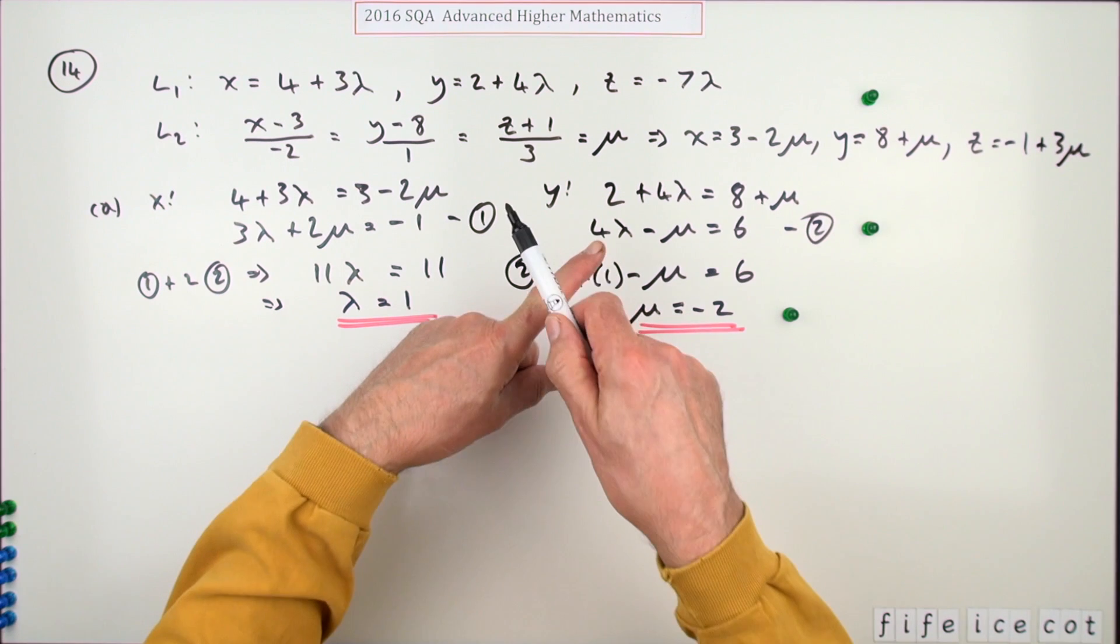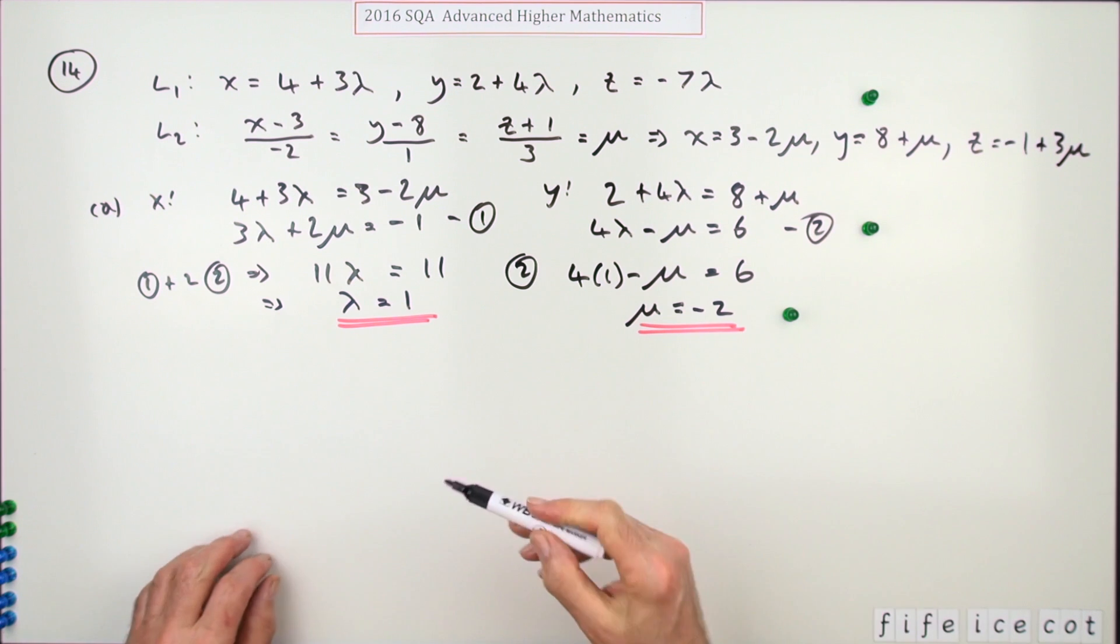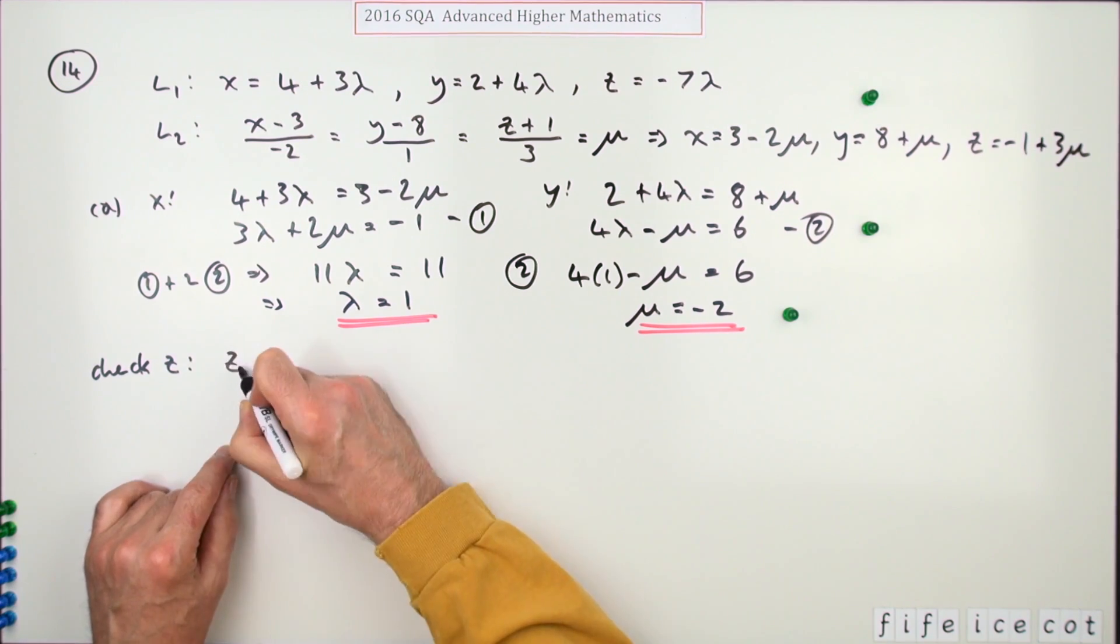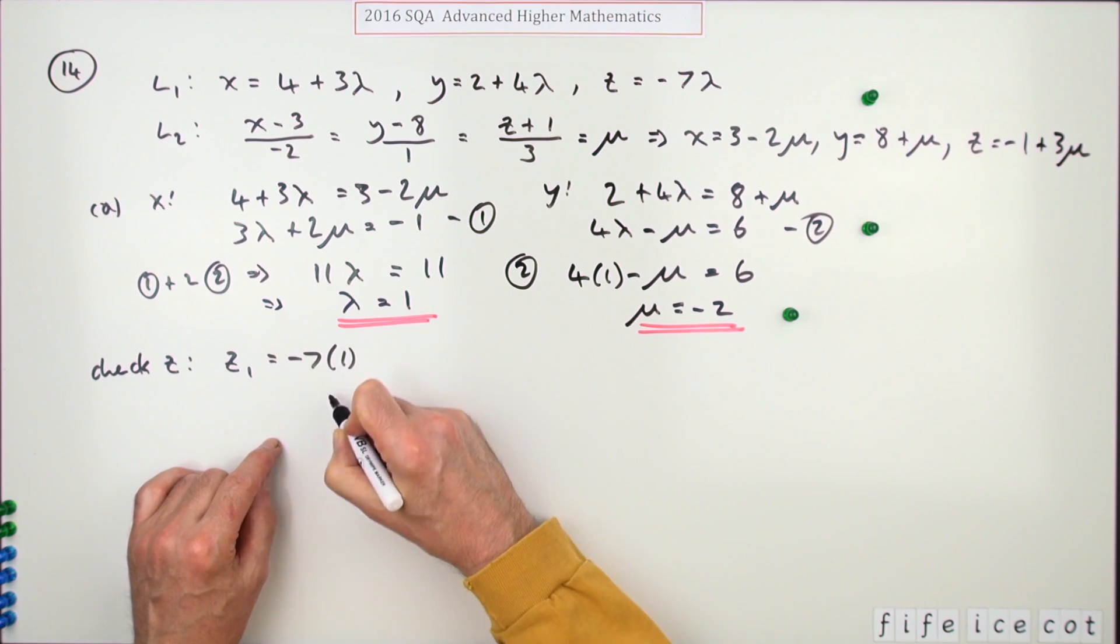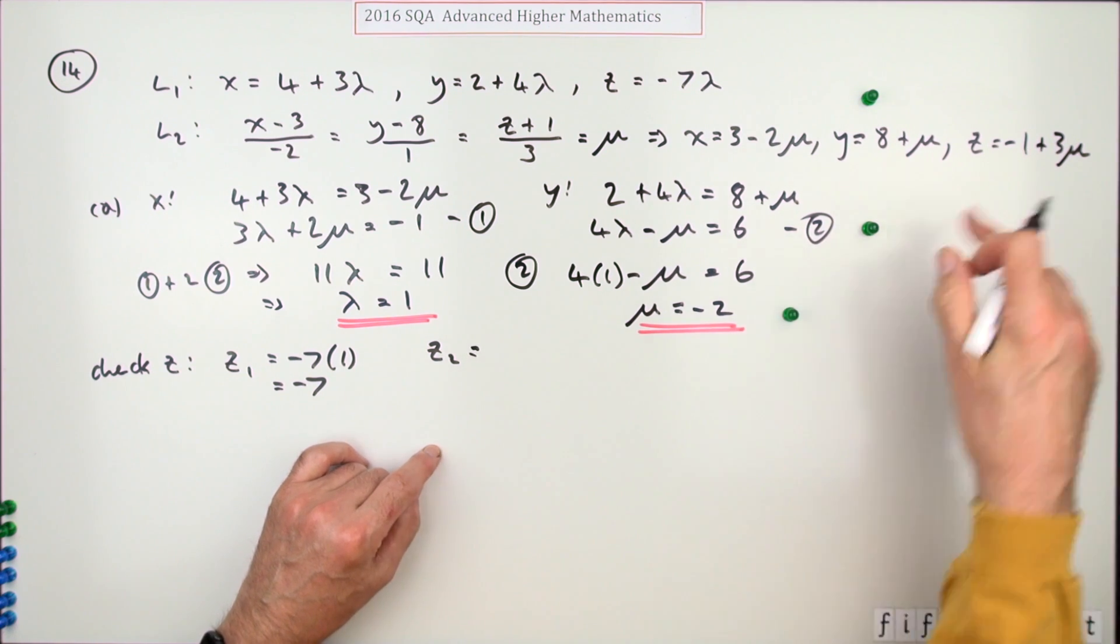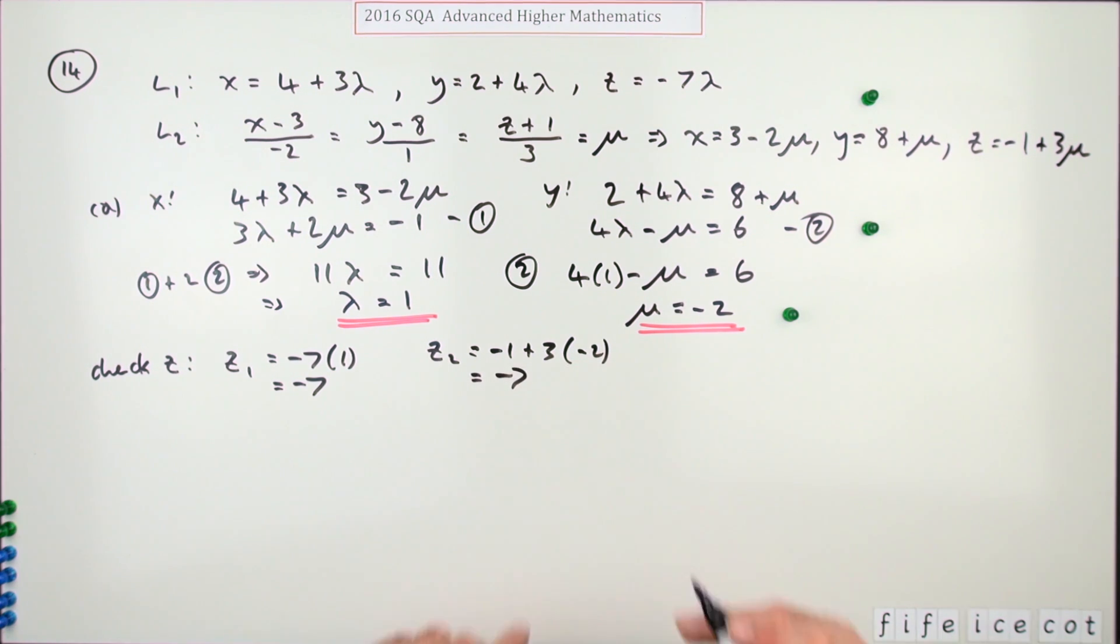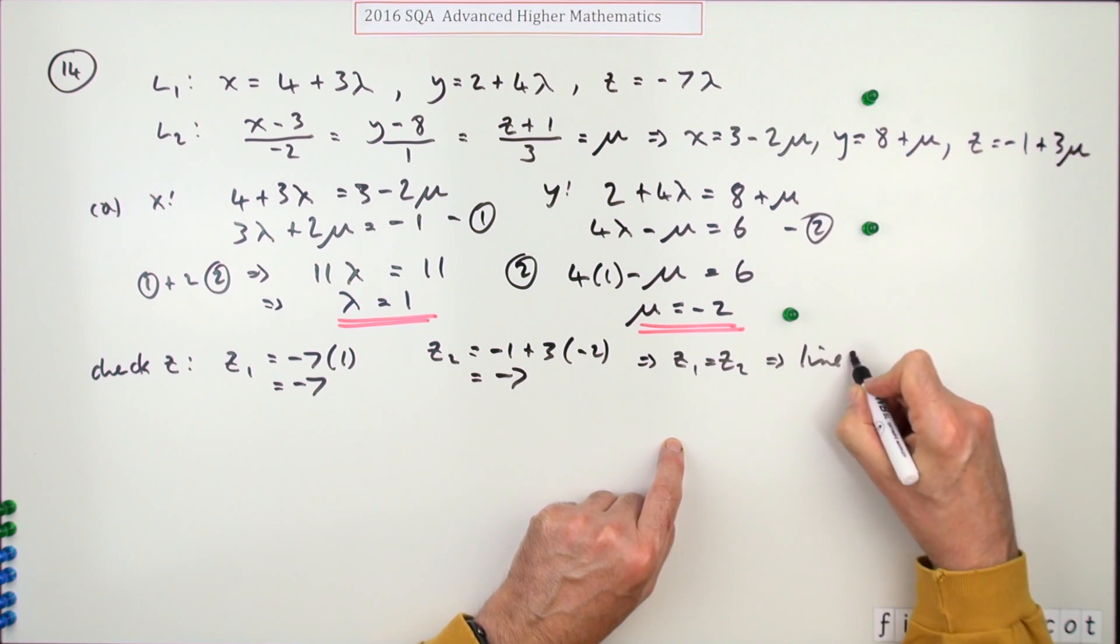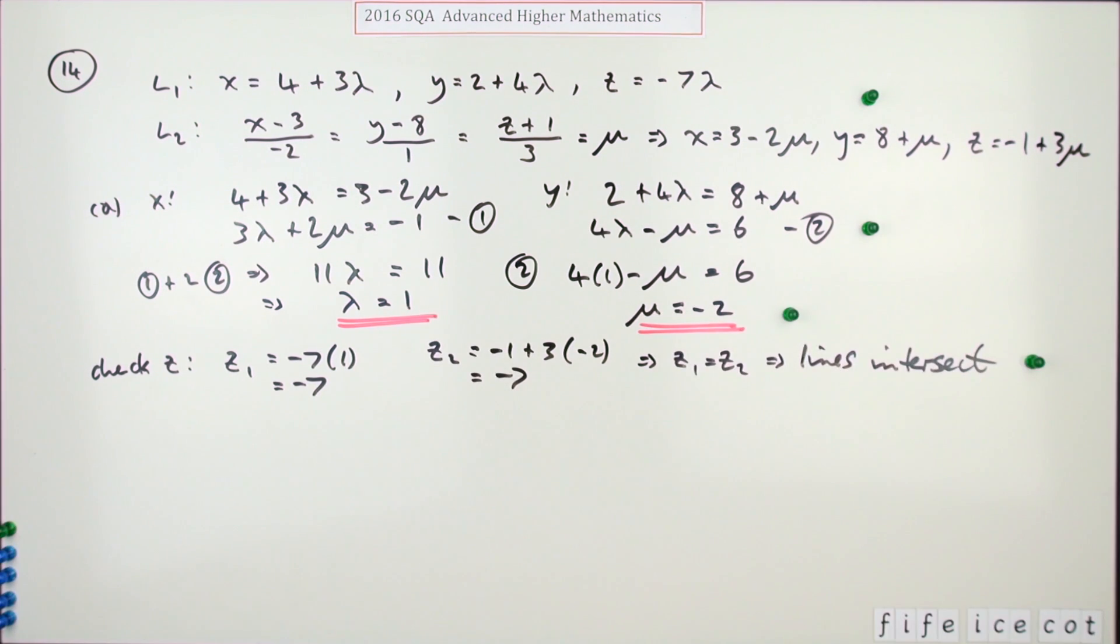But now comes the check, because two lines will share a point projected onto a plane. Is the third component going to be consistent? I'm going to check the z coordinates. z1 from line 1 should be negative 7 times 1, which is negative 7. z2 from this line should be negative 1 plus 3 times negative 2, which is also negative 7. So z1 equals z2, which means lines intersect. Doing that gets you the fourth mark.